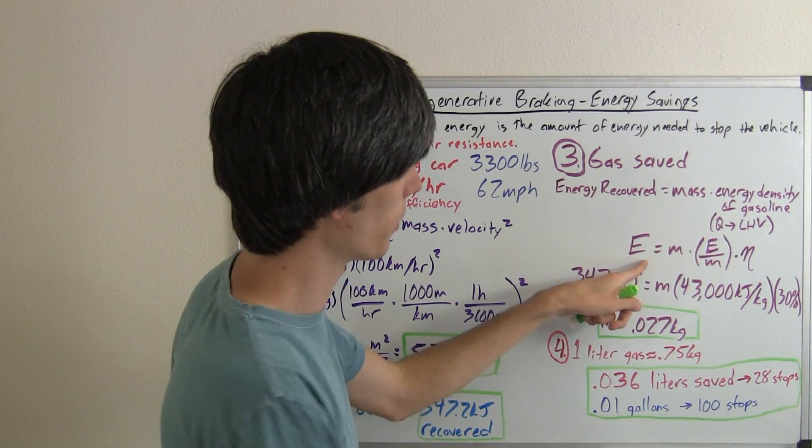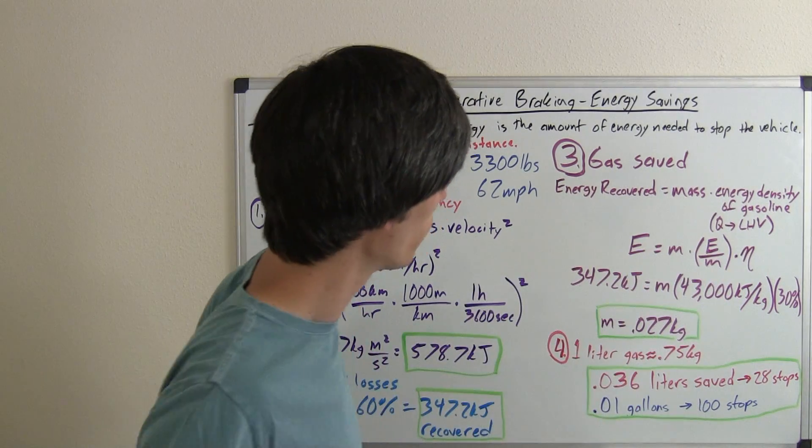So we've got to put in our efficiency of how well we can convert that energy into usable energy. Okay, so this of course makes sense. Cancel out our mass. We've got E equals E. Perfect.